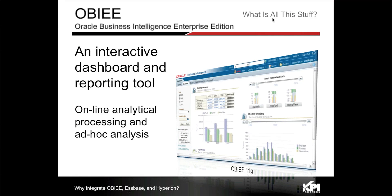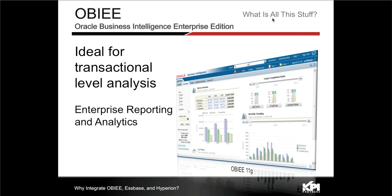OBIEE is an enterprise-wide reporting and analytics tool. It provides interactive dashboards and reporting to enable online analytic processing and ad hoc querying. The OBIEE we're looking at within 11G is a lot different than older versions — it has really matured and assimilated a lot of the old Hyperion tool functionality. It is ideal for transaction-level analysis and really the enterprise-wide approach to reporting. This is Oracle's strategic answer for all enterprise-wide analytics.